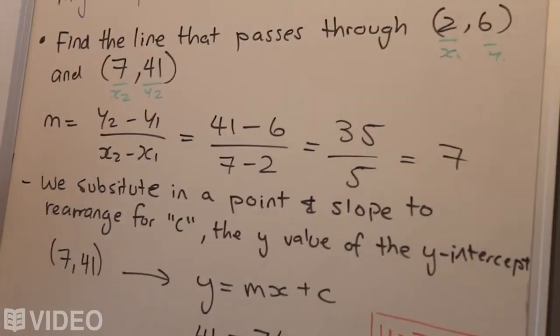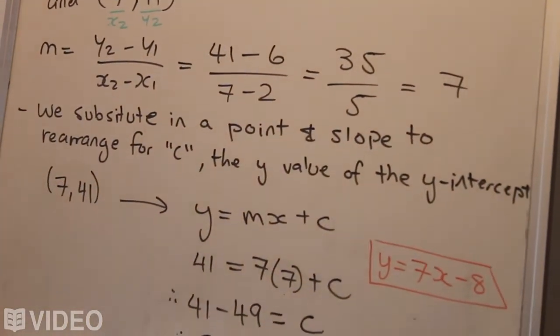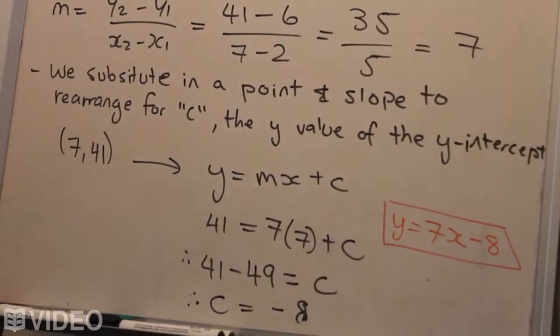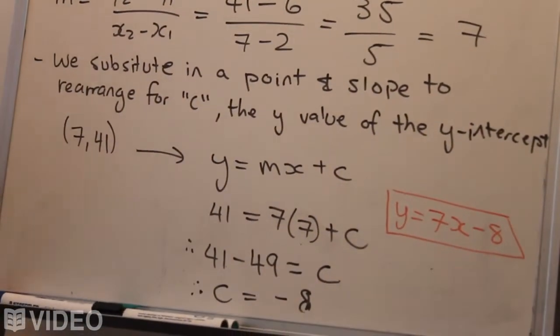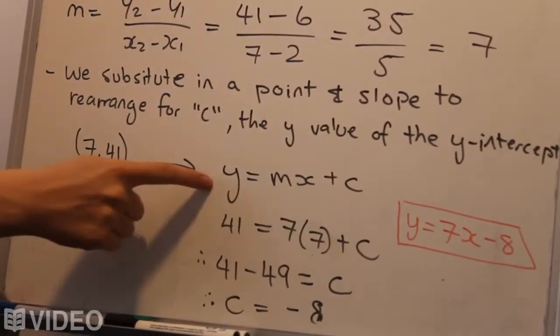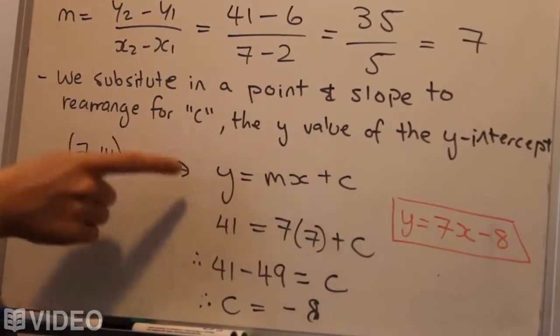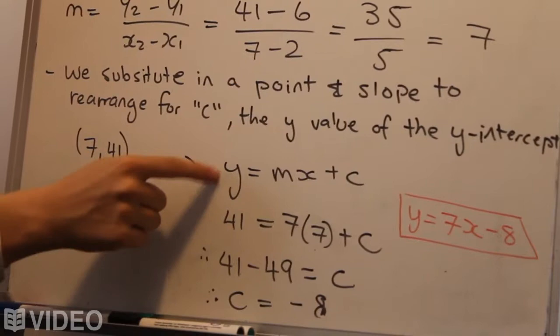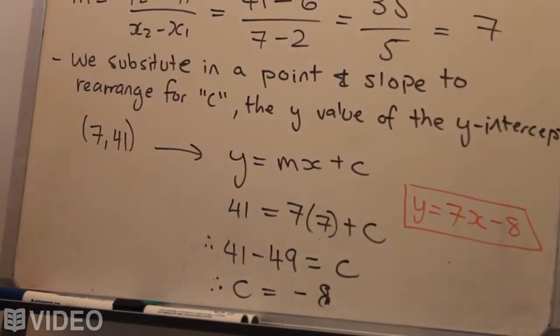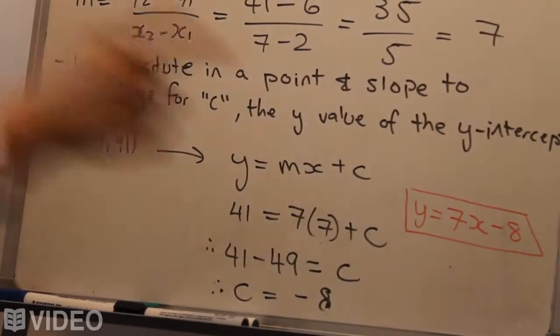This is the important part here: we substitute in a point and slope to rearrange for c, which is the y value of the y-intercept. What we do is just take any one of the points—it doesn't matter which one. I'm going to take (7, 41) and just do some algebra with that. We put 41 in where y is and 7 where x is. The general form is y equals mx plus c, so we just put a point in there. That way we only have one variable we need to solve for, and that variable is c, the y-intercept y value.